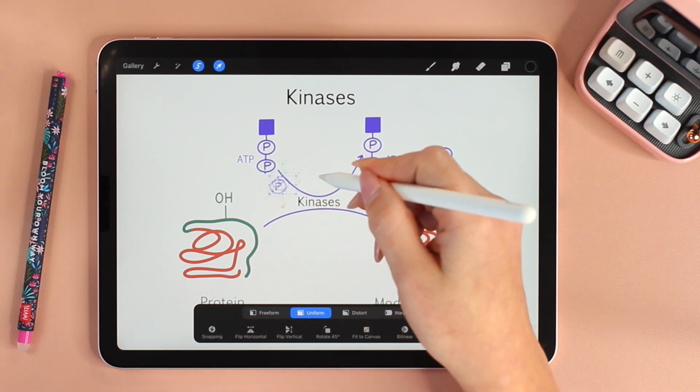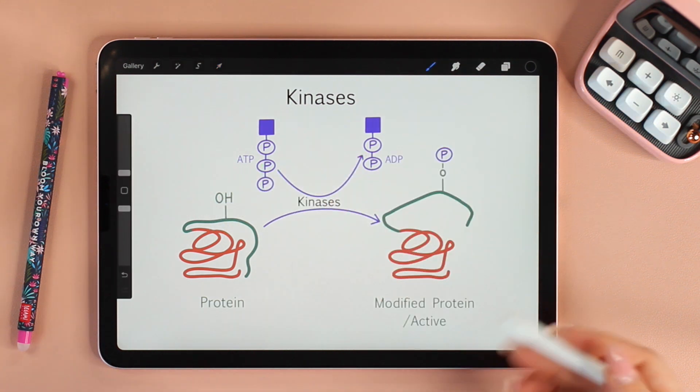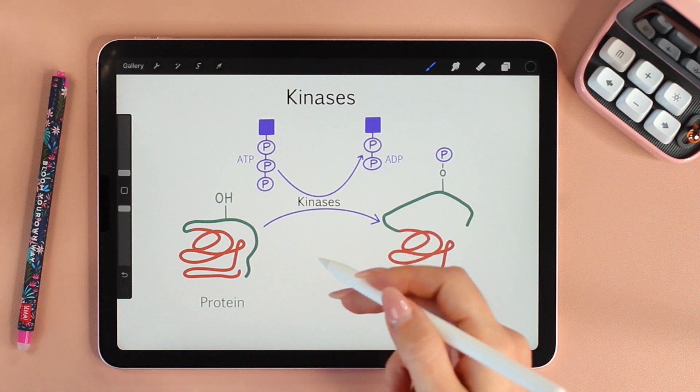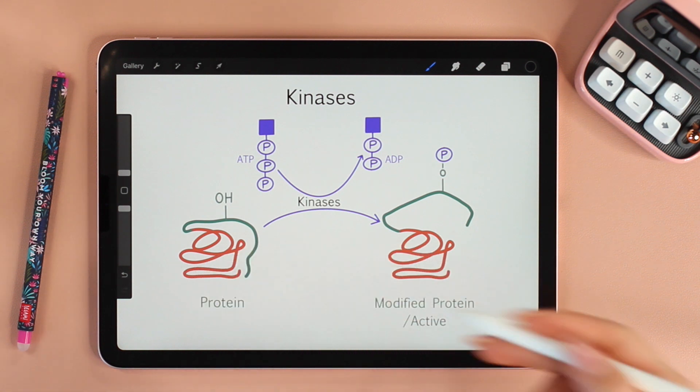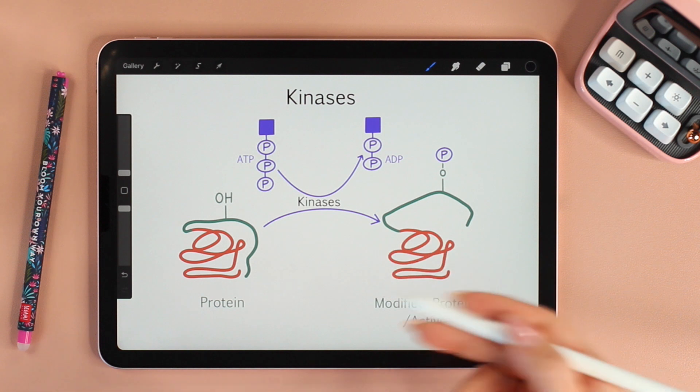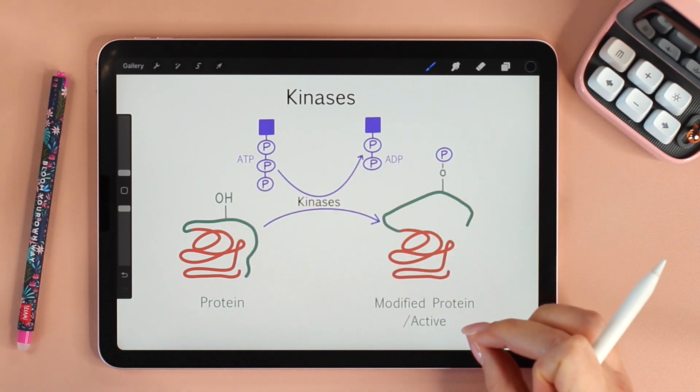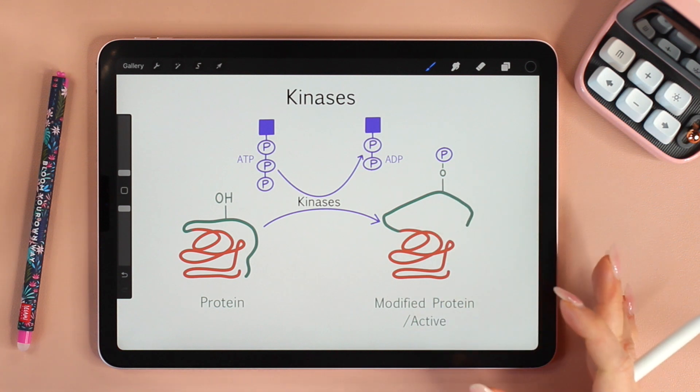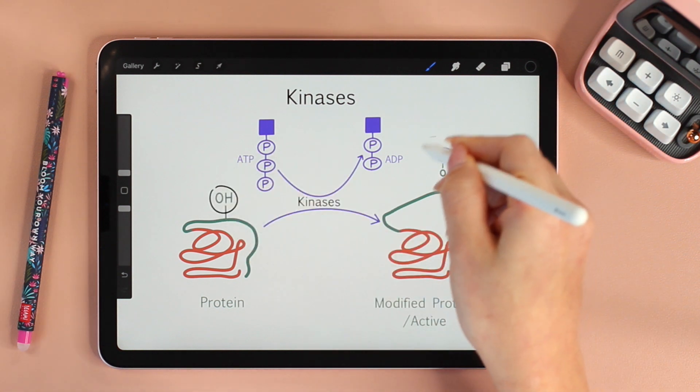But what does that mean, to activate the protein? See, in signaling, the cell is either asked to make brand new proteins or modify pre-existing proteins. In this case, those proteins are already made. They just need one last modification for them to become active. That modification, in this case, is the addition of a phosphate group.